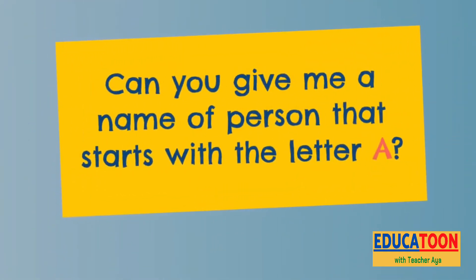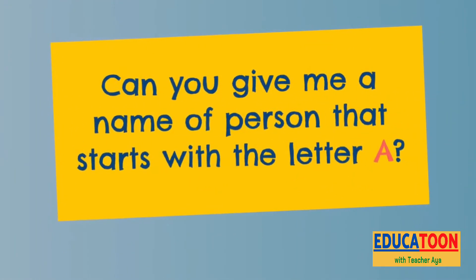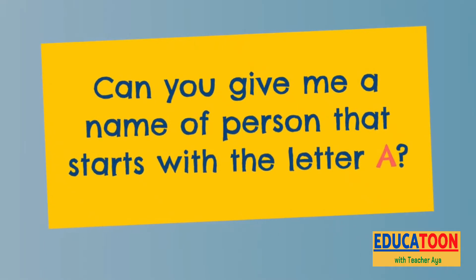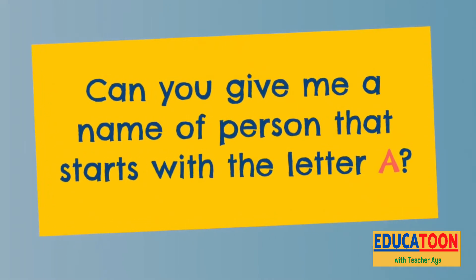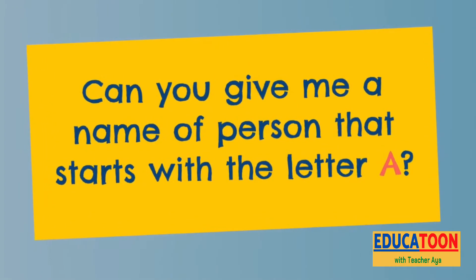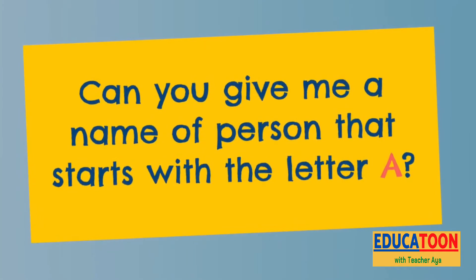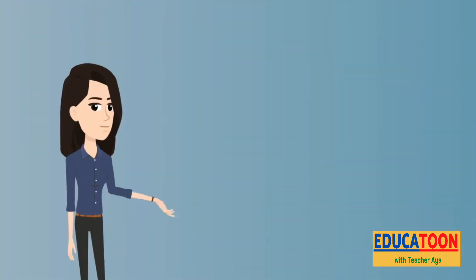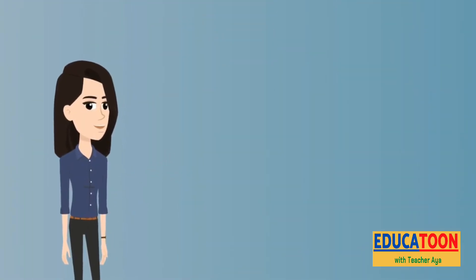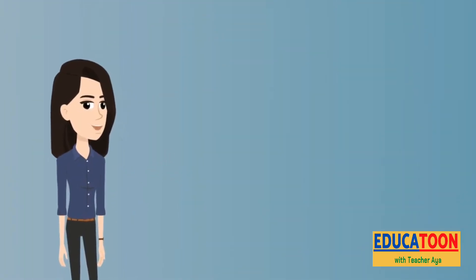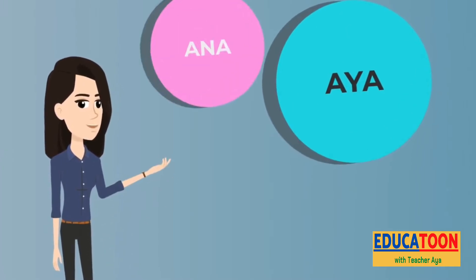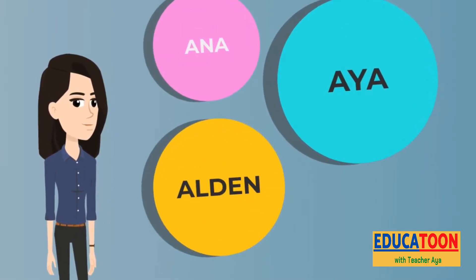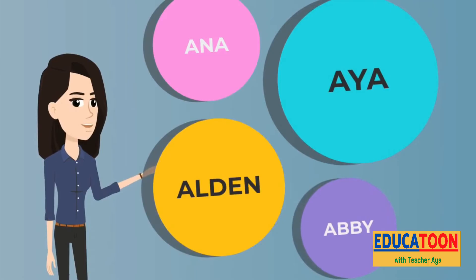Can you give me a name of a person that starts with the letter A? That's right! The possible answers are Aya, Ana, Alden, or Abbey.